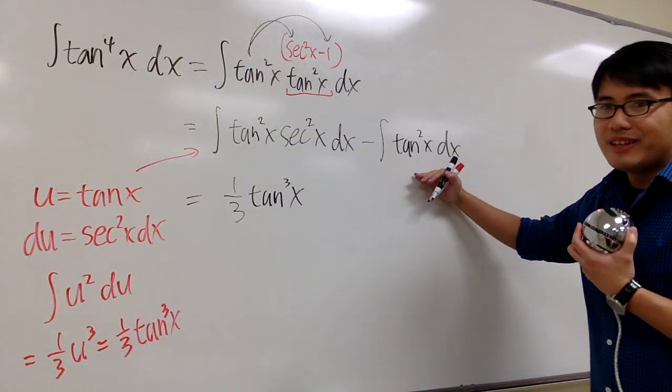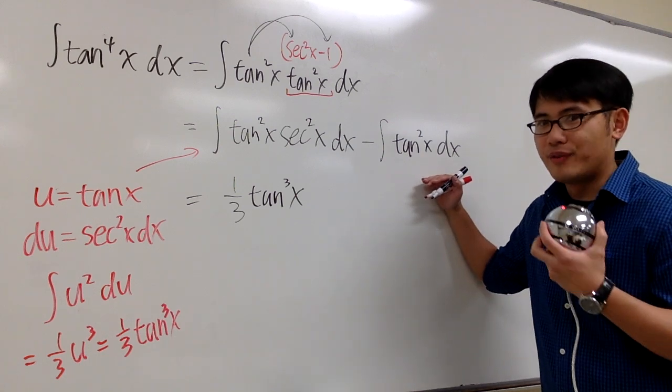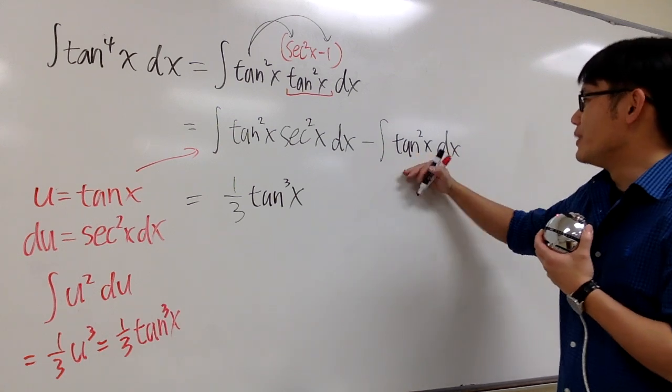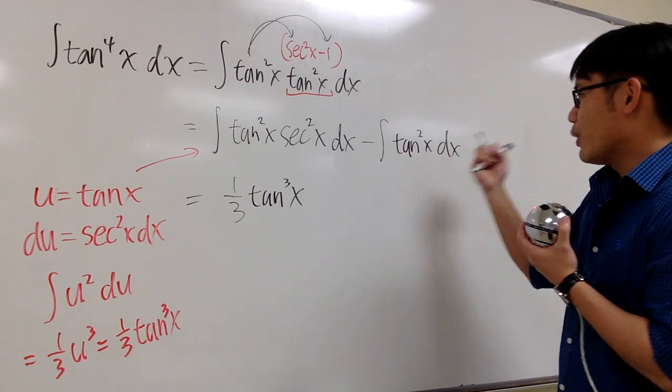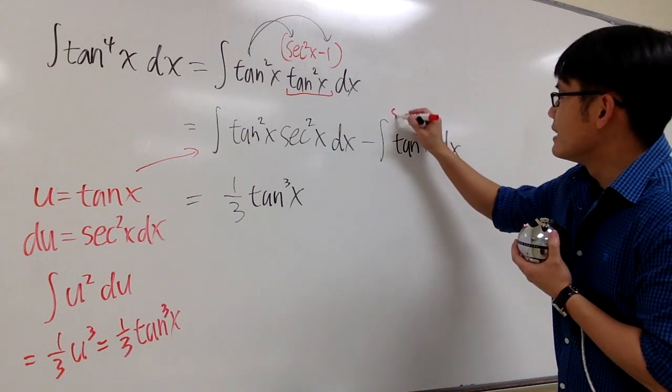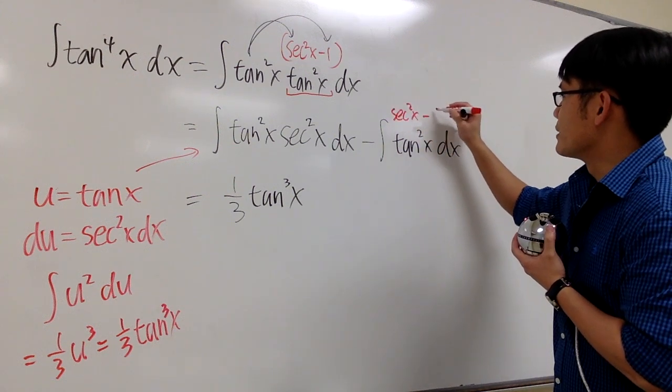And for this one, you can check out my two videos ago, because we did this already. And to do this, it's also pretty easy. You look at tangent square x as secant square x minus 1.